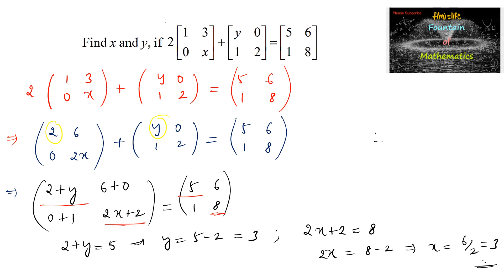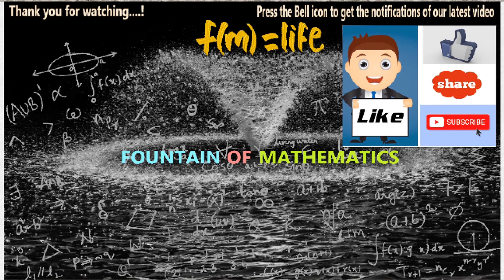So, we can conclude that x is equal to 3 and y is equal to 3 is the answer. And we can also see that the other element 6 plus 0 and here 6 both are same, 0 plus 1 and 1 both are same. Okay, thank you.